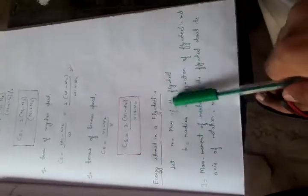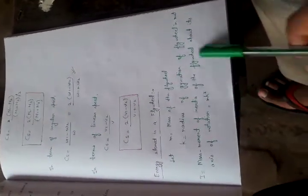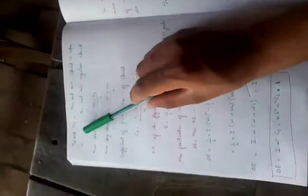So students, today we will study about the energy stored in a flywheel. First of all, let us assume m is equal to mass of the flywheel, k is equal to radius of gyration, r is equal to radius, and I is equal to mass moment of inertia, which is equal to mk square.